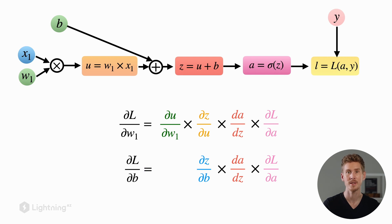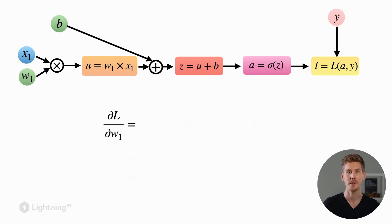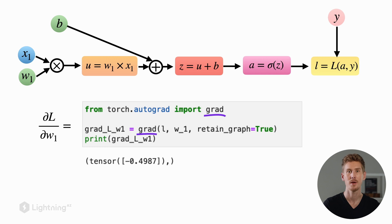We can compute these gradients or partial derivatives conveniently using the grad function from torch.autograd. Torch.autograd allows us to do automatic differentiation, or in other words, computing the gradients automatically. Here we pass the loss and the weight variables into this grad function, and we also set retain_graph equals true.